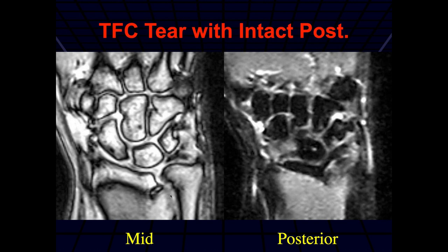So this was a tear — kind of a radial side tear, but a partial tear involving the mid and volar aspect, whereas the dorsal aspect was still intact.